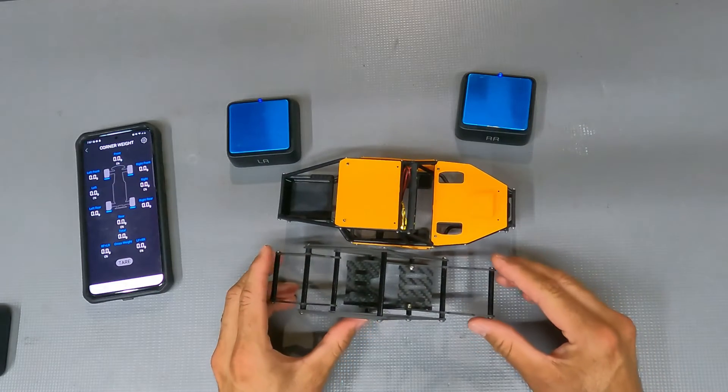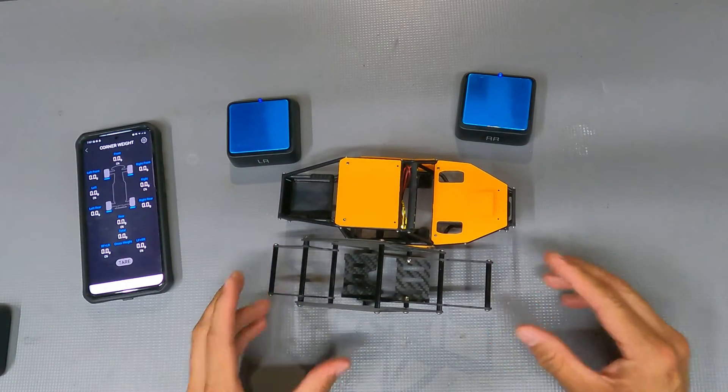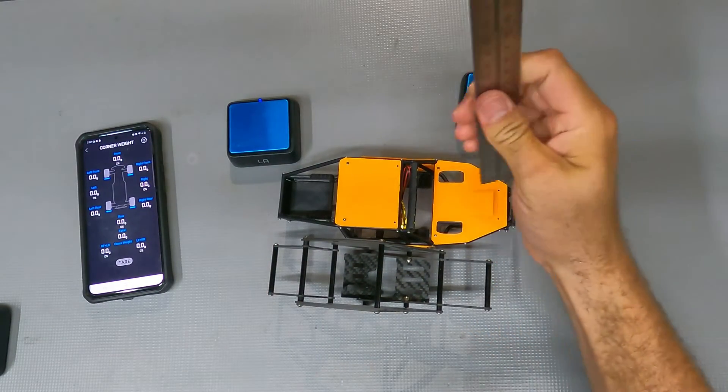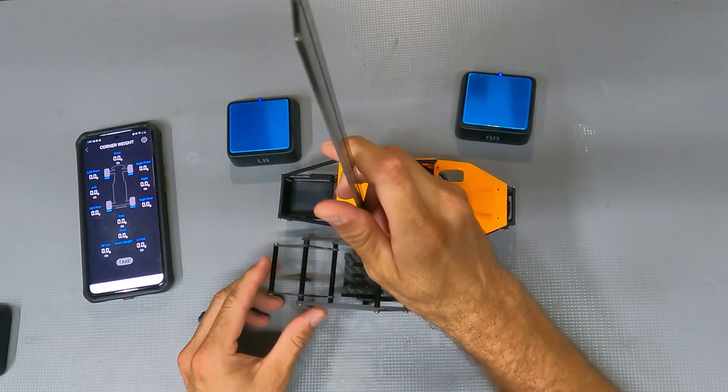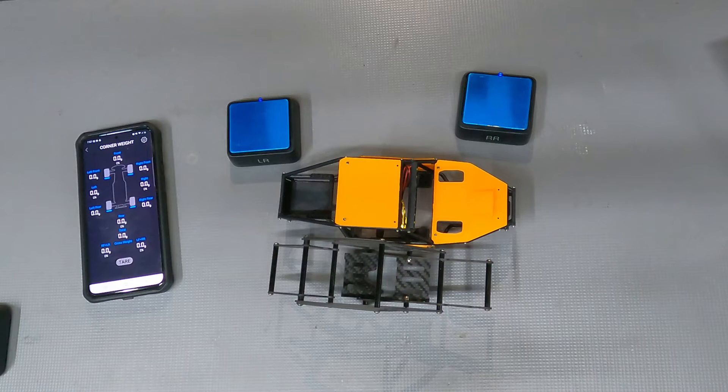So when we line them up where the shock mounting locations are, the Kangaroo is about a quarter inch taller than the Tarantula.